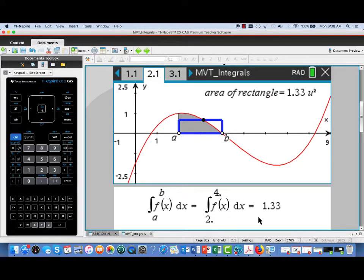We also have the value of the definite integral of f of x dx from 2 to 4. It's shown here as 1.33. In the upper right is shown the area of a rectangle that's exactly equal to that definite integral value.